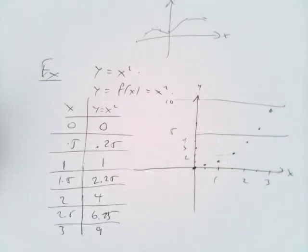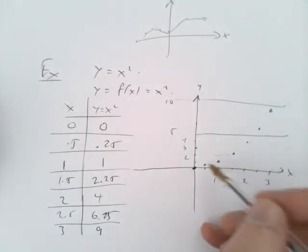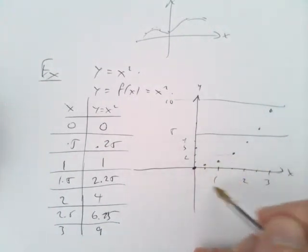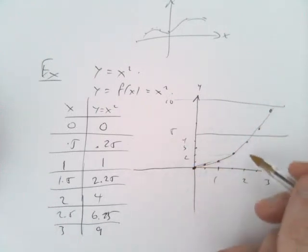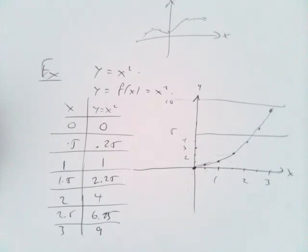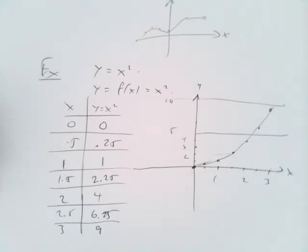Of course, it doesn't tell us for sure what it looks like. We don't really know that it doesn't go wiggling all over the place in between these dots, but we might guess that it would somehow smoothly join up the dots. That's a problem we have to face.